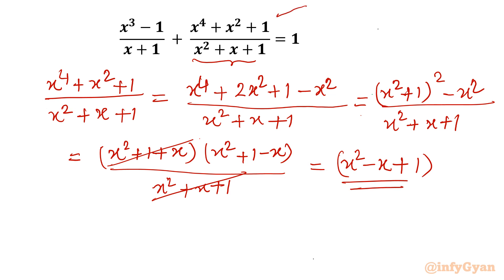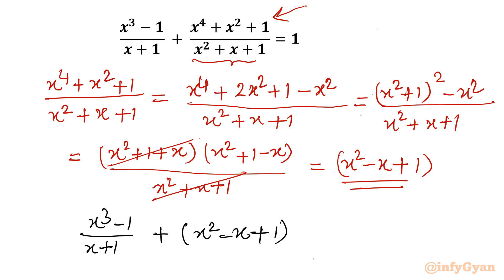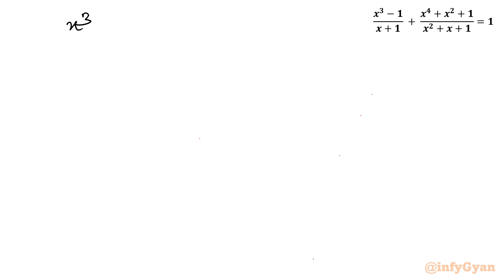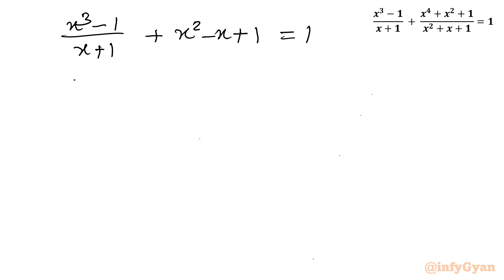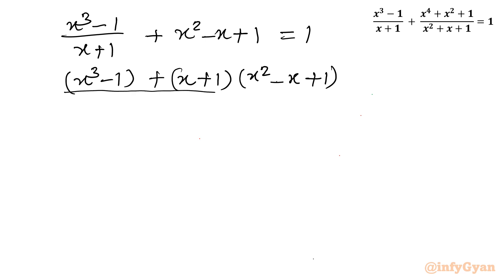Now I will substitute this value back into the equation. The rational equation becomes x³ - 1 over x + 1, plus x² - x + 1, equal to 1. Taking LCM, I write x³ - 1 plus (x + 1)(x² - x + 1), all over denominator x + 1, equal to 1.